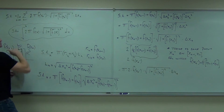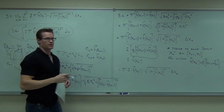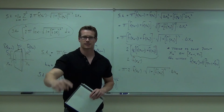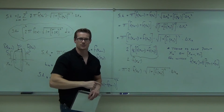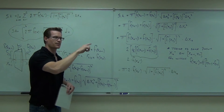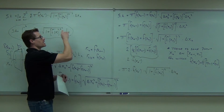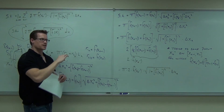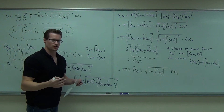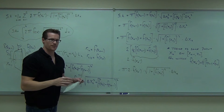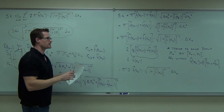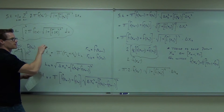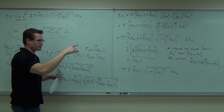This is how you find the surface area of revolution about the x-axis. Notice it's in terms of x, just like the disc and washer, just like the length of the curve.